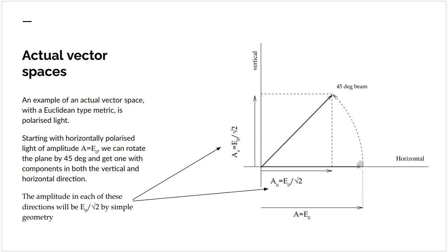We can then rotate the plane of polarization by 45 degrees and get another wave, which is of amplitude E0 in the 45 degree direction.